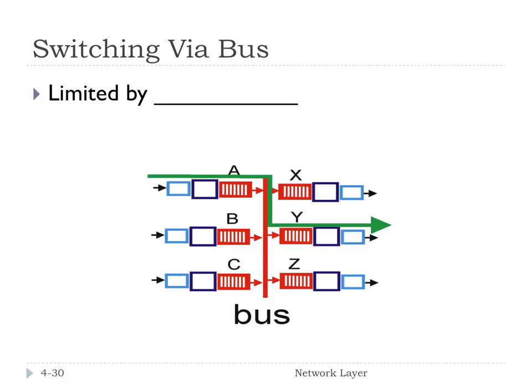A bus is another way of doing switching. In this scenario, the datagram is switched from input port memory to output port memory over a shared bus. The switching speed will be limited by the bus bandwidth — how many bits per second the bus can transfer. Bus contention can occur when more packets need to be transferred than the bus can handle in a given period. The book notes that Cisco routers operate at a bus speed of 32 gigabits per second, which is sufficient for most access and enterprise routers.